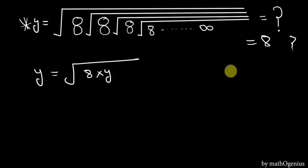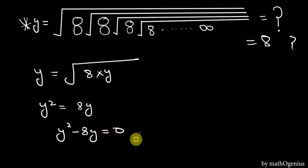Now taking square, y square is equal to 8y, and taking this in here, y square minus 8y is equal to 0.